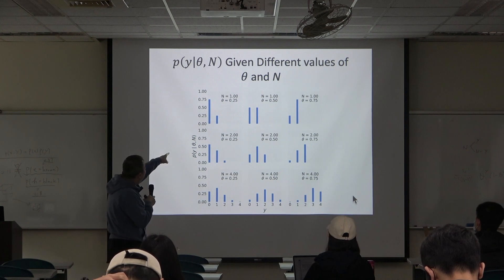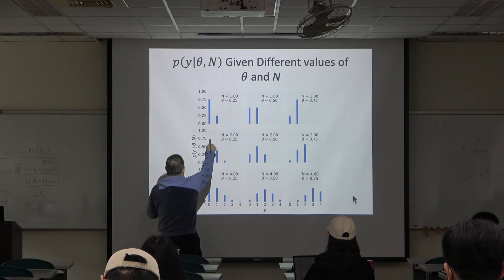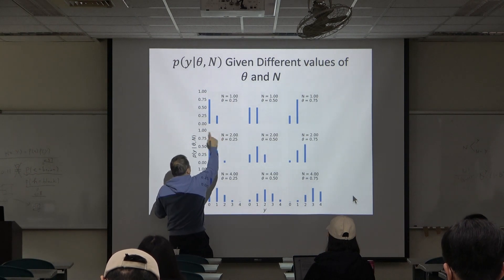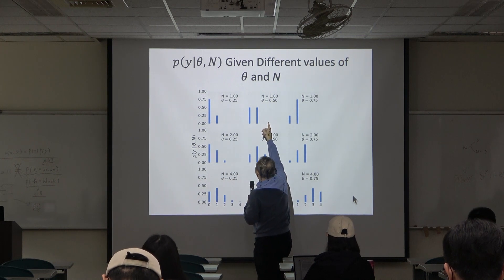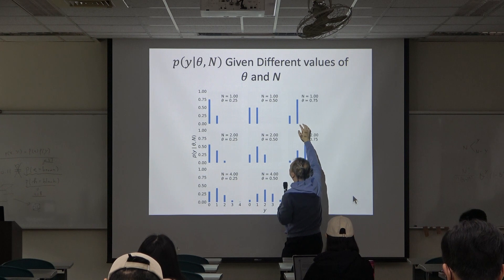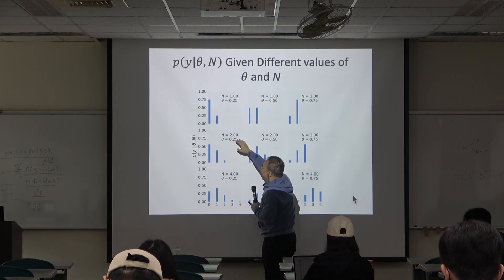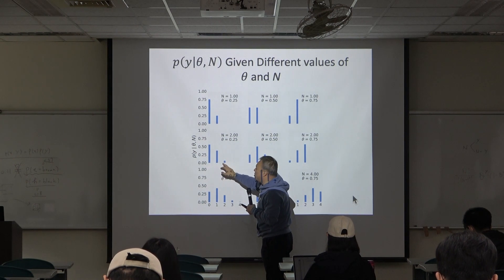Y is zero, y is one, and theta is 0.25. This represents the upper left corner. We change the theta value to 0.5, then to 0.7. And this one we change n to be 2, so we have three possible cases for y.